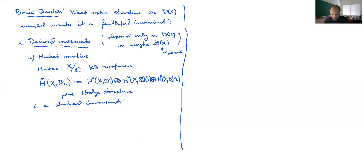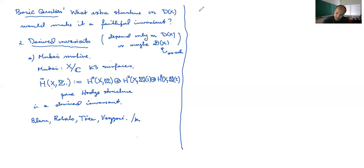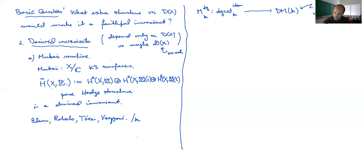There's a motivic interpretation of this, which I learned from looking at a paper of Blanc, Roballo, Toewen, and Vezzosi. We're over this field k, and there's a functor from DG categories. This lands in a triangulated category of motives over k — always tensored with Q in my discussion today. This is from the infinity category of DG categories over k, which should be idempotent complete and triangulated.